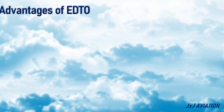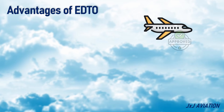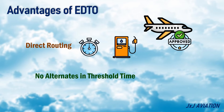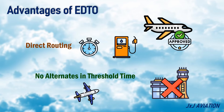Advantages of EDTO. As seen before, with an EDTO approval, an aircraft can have a more direct routing, which means less flight time and less fuel consumption. Another advantage is that on particular routes, if there are no alternates available within the threshold time, an EDTO approval would give clearance to an aircraft to fly on these routes.